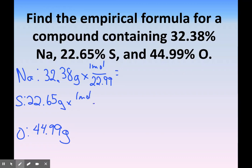One mole over sodium's mass is 22.99, sulfur is 32.06 grams, and oxygen is 16 grams. So 32.38 divided by 22.99 gives me 1.41 moles. 22.65 divided by 32.06 gives me 0.71 moles, and 44.99 divided by 16 gives me 2.8 moles.